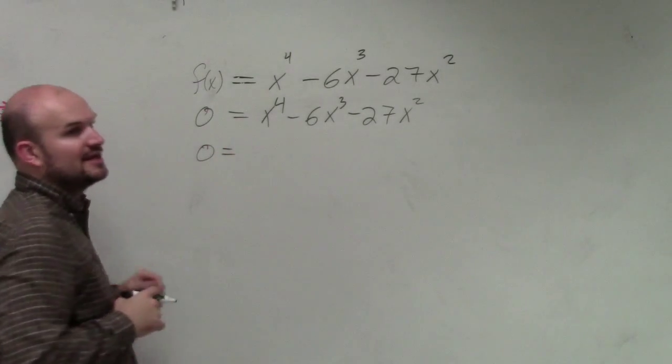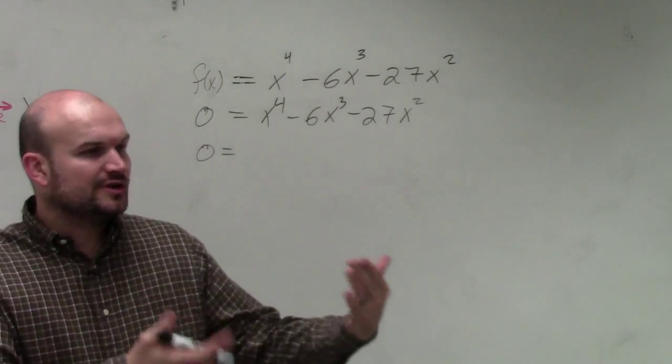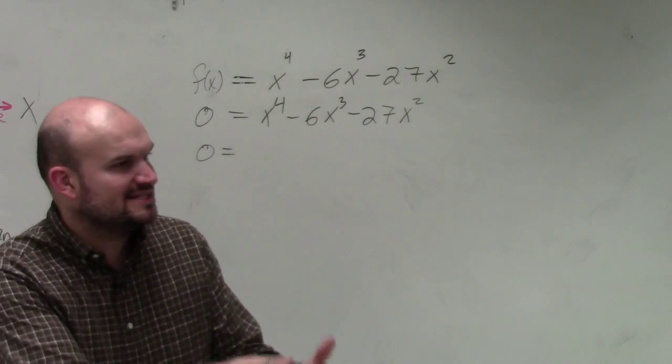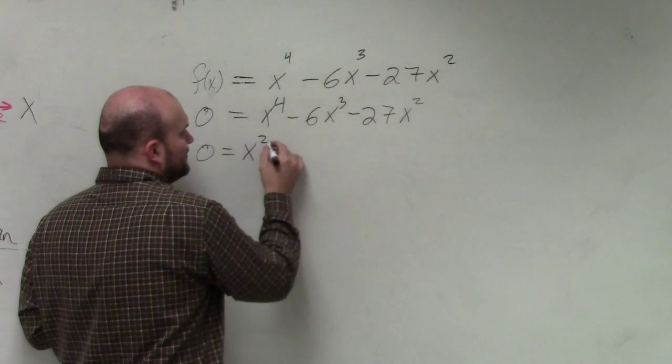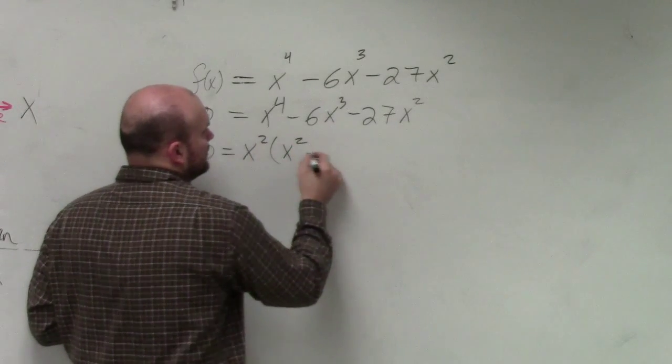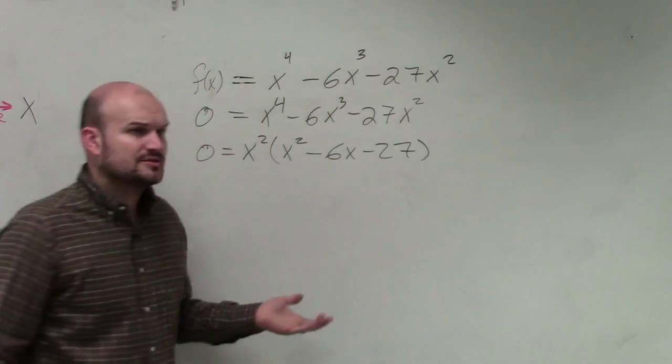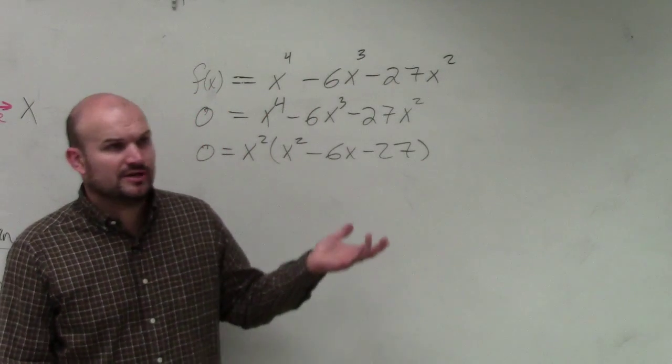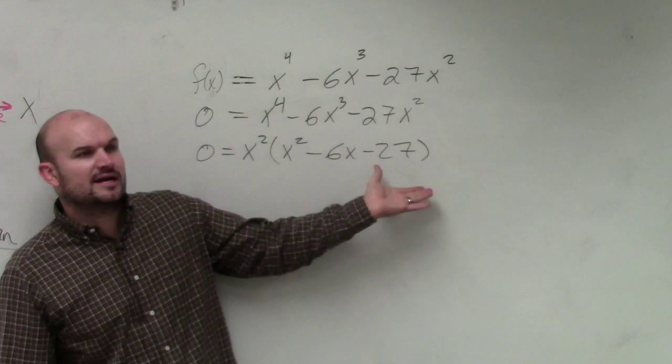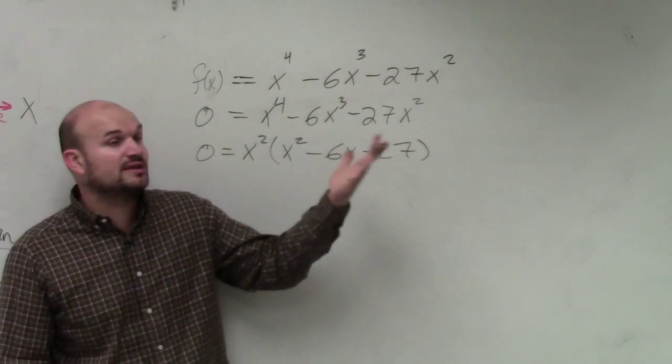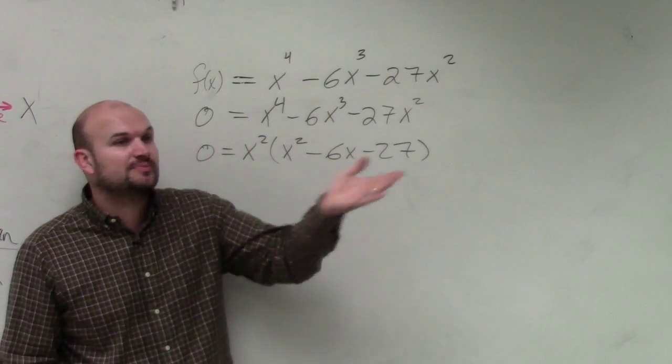So since they all share an x squared, what you can do is you can factor it out, which is the same thing as dividing out an x squared. Now, please follow me if you're having trouble following along with how I factored this out. And don't feel bad if you don't understand. Just let me know and I'll re-explain. Does anybody not understand how I divided out the x squared?